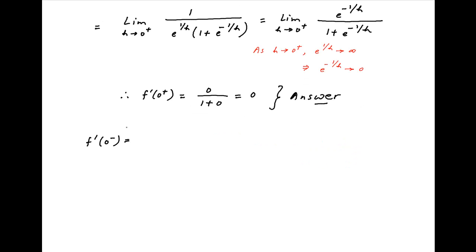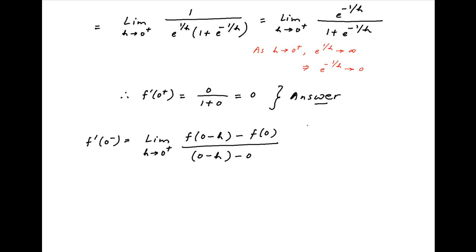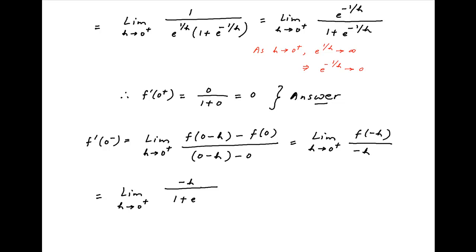Now the value of f'(0) from the negative side is equal to the limit as h tends to 0 from the positive side of [f(-h) - f(0)] / (-h). This simplifies to the limit as h tends to 0 from the positive side of 1 / (1 + e^(-1/h)).